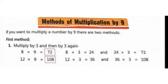In the previous class we have learnt the methods of multiplication by 9. You have learnt the first method that is multiply by 3 and then by 3 again. Now in this module we are going to learn multiply by 10 and then subtract the multiplier.